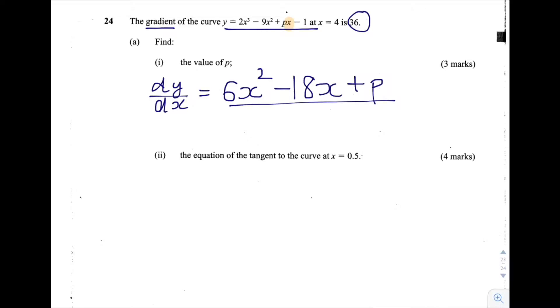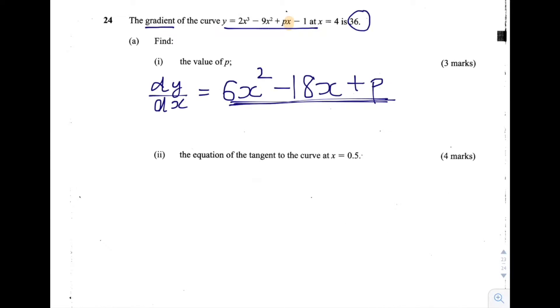So what we have to do now is equate the expression here to 36 and substitute x for 4. So we get 36 is equal to 6 multiplied by 4 squared minus 18 multiplied by 4 plus p.